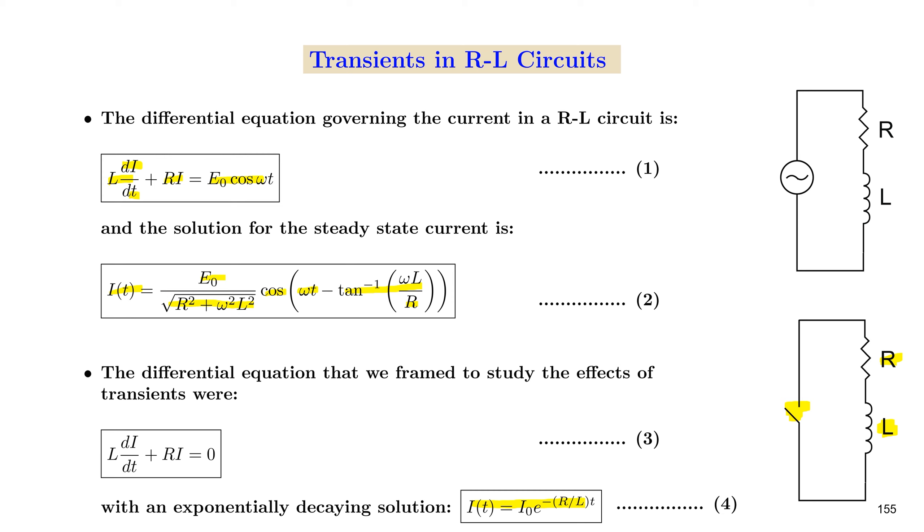If we are also considering the effect of transients in the circuit, then the solution of the current would be a superposition of equation 2 and equation 4. Equation 2 will be known as a particular solution and equation 4 will be known as a complementary solution. The new solution, the superposition of equations 2 and 4, will be equally valid because the right hand side of equation 3 is 0 and therefore it will not affect the equality in equation 1.